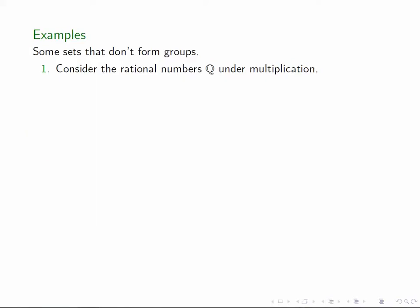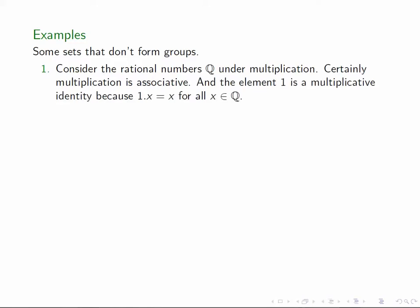Let's wrap up by looking at some sets that don't form groups. First of all, the rational numbers under multiplication. This set almost forms a group. Multiplication is associative. It has an identity element, just the number one. The only problem is that the third axiom fails because the zero element does not have a multiplicative inverse.